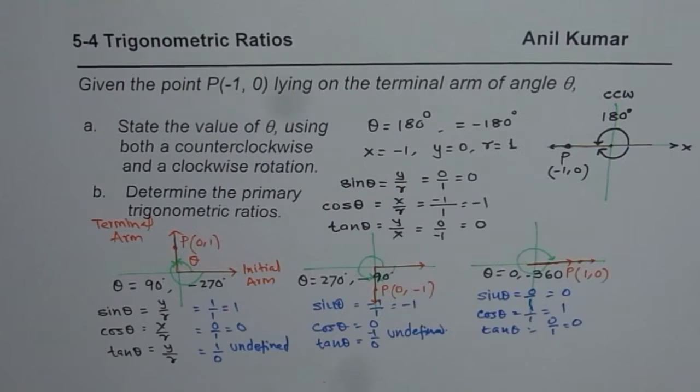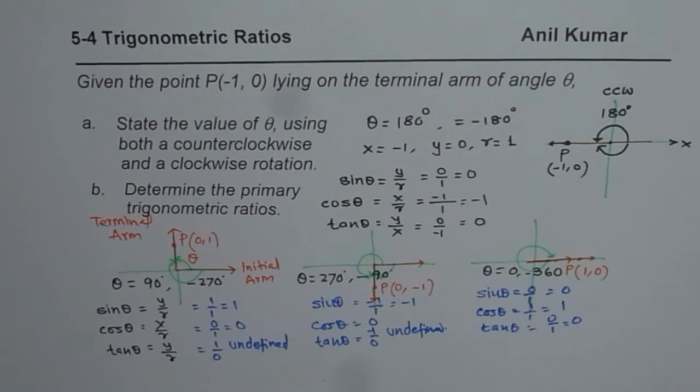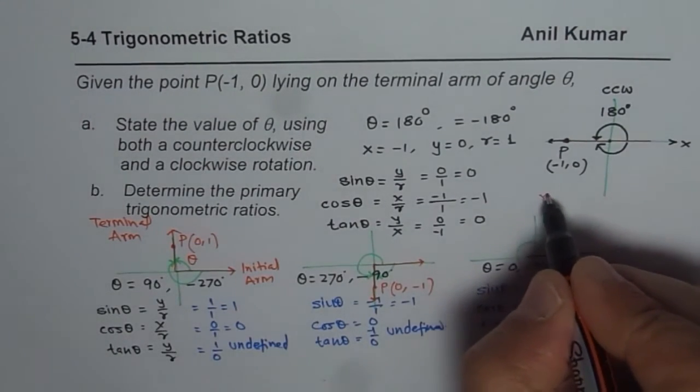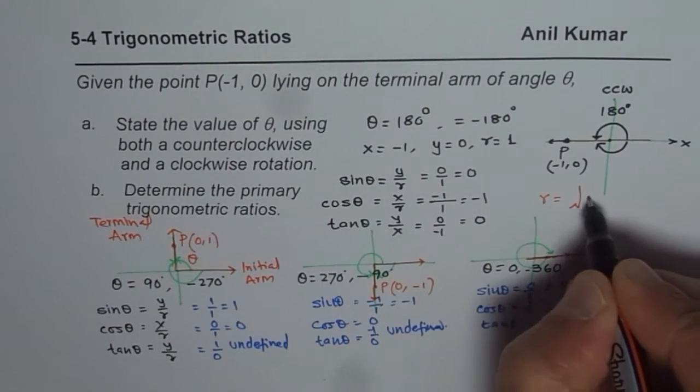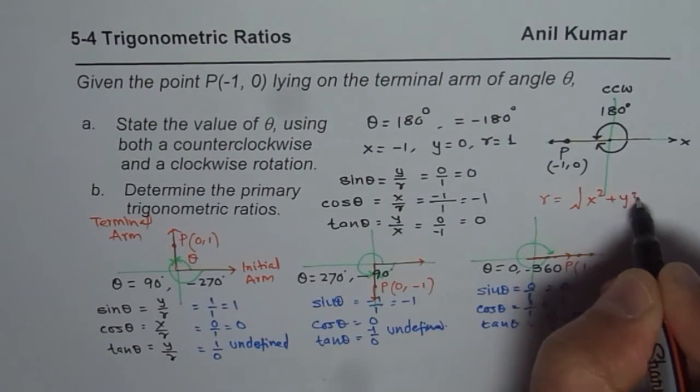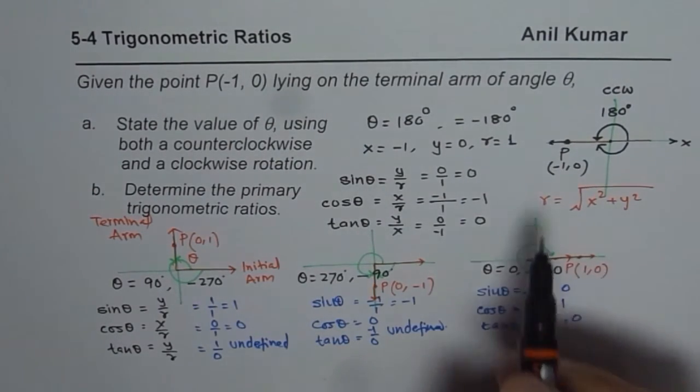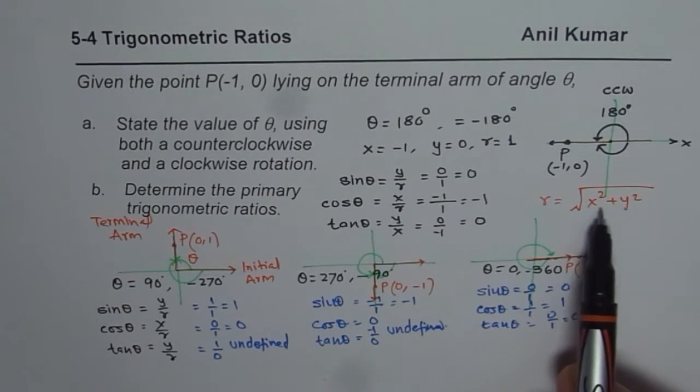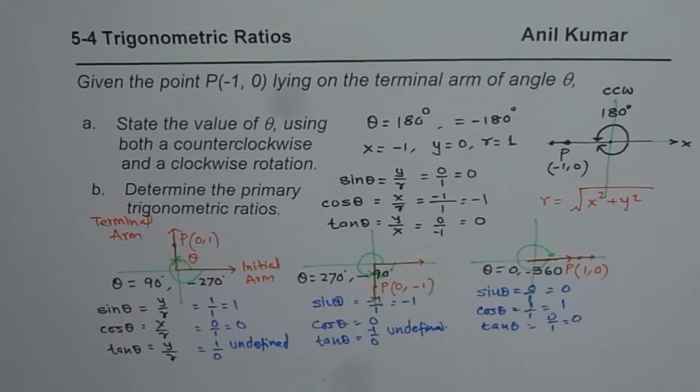So these are the solutions for the point on the x or y-axis. I hope this exercise helps you to understand that sin theta is the ratio y over r, cos theta is x over r, tan theta is equal to y over x, and r is square root of x squared plus y squared, which is always positive. In our case it was 1 because either one of these values was 0 or 1.